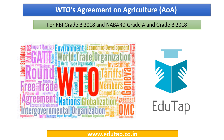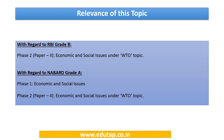Hello Friends. Today's topic of discussion is WTO's Agreement on Agriculture. The relevance of this topic with respect to RBI Grade B will be in Phase 2, Paper 2 Economic and Social Issues under WTO. With respect to NABARD Grade A, it will be in Phase 1 Economic and Social Issues and Phase 2 Paper 2 Economic and Social Issues under WTO.